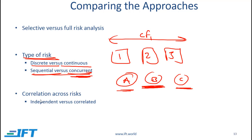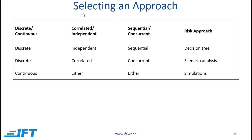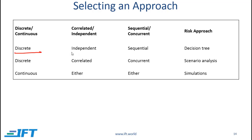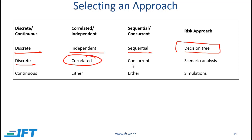The final point to consider is whether there is a correlation across risks. The risk factors can either be independent of each other or there might be certain risk factors which are correlated. We can now talk about selecting an approach. If we are dealing with discrete risk where the risk elements are independent and we have sequential risk, then the decision tree is an appropriate approach. If we have discrete risk where the risks are correlated and concurrent, then scenario analysis makes sense.